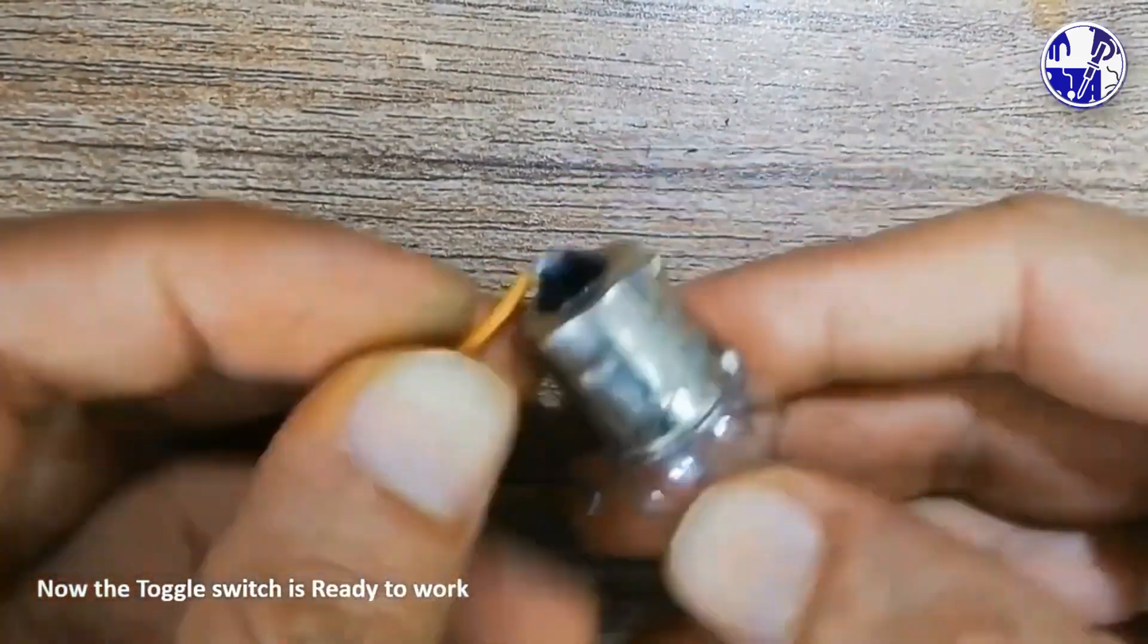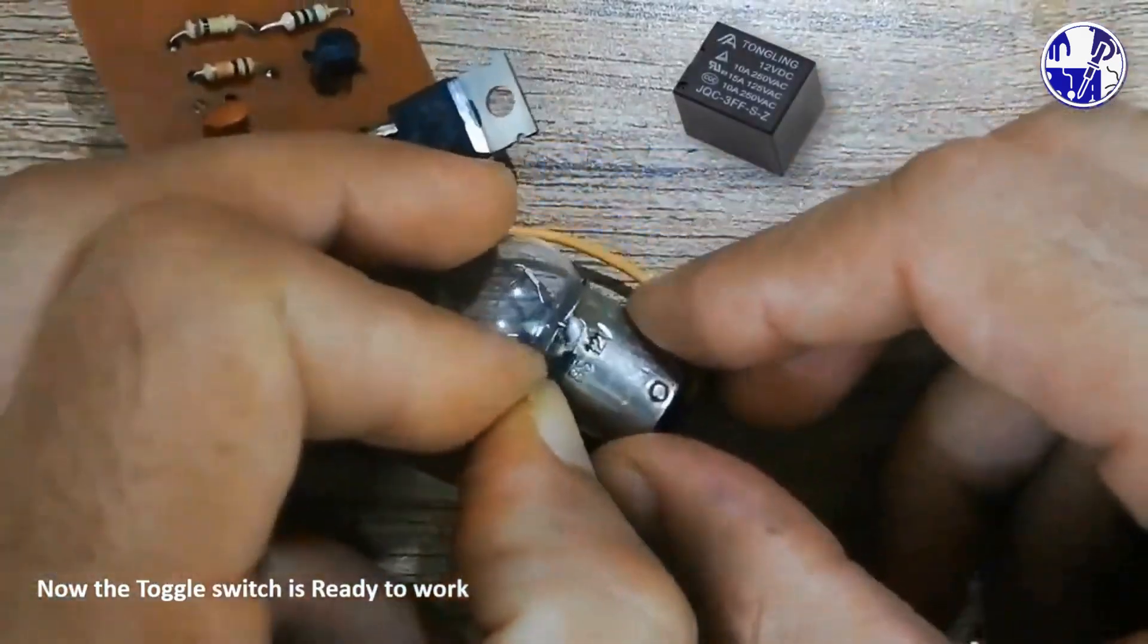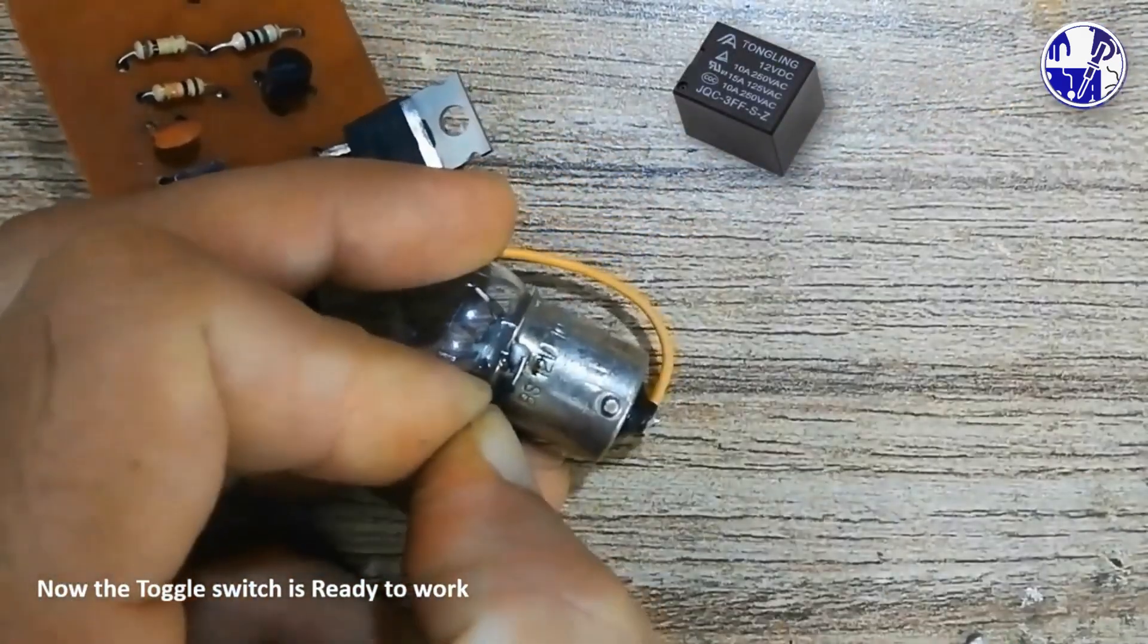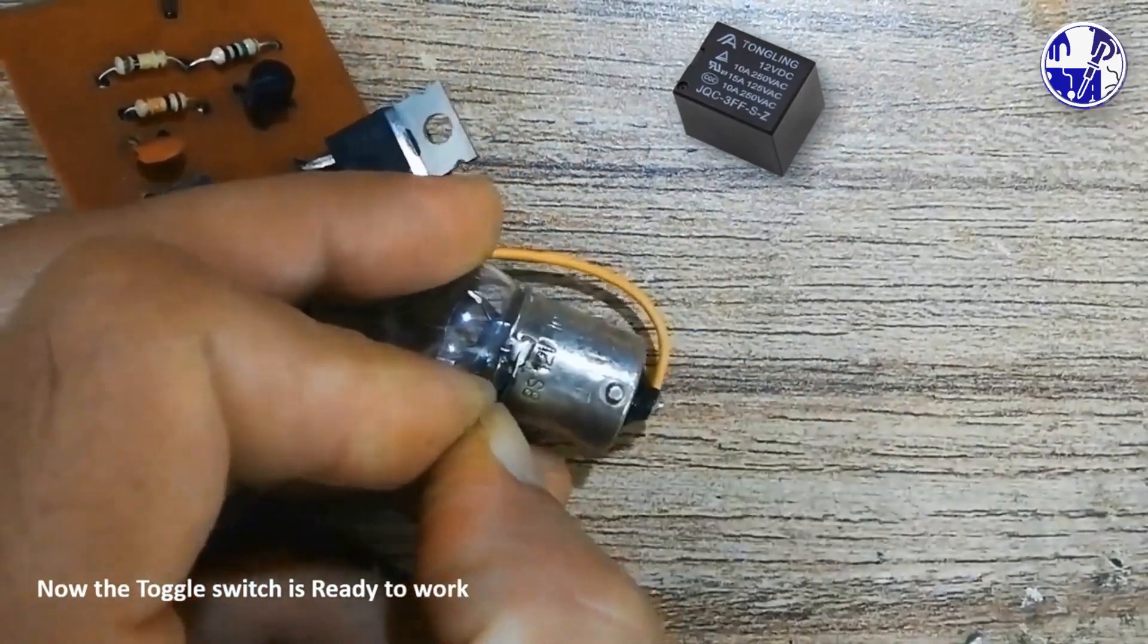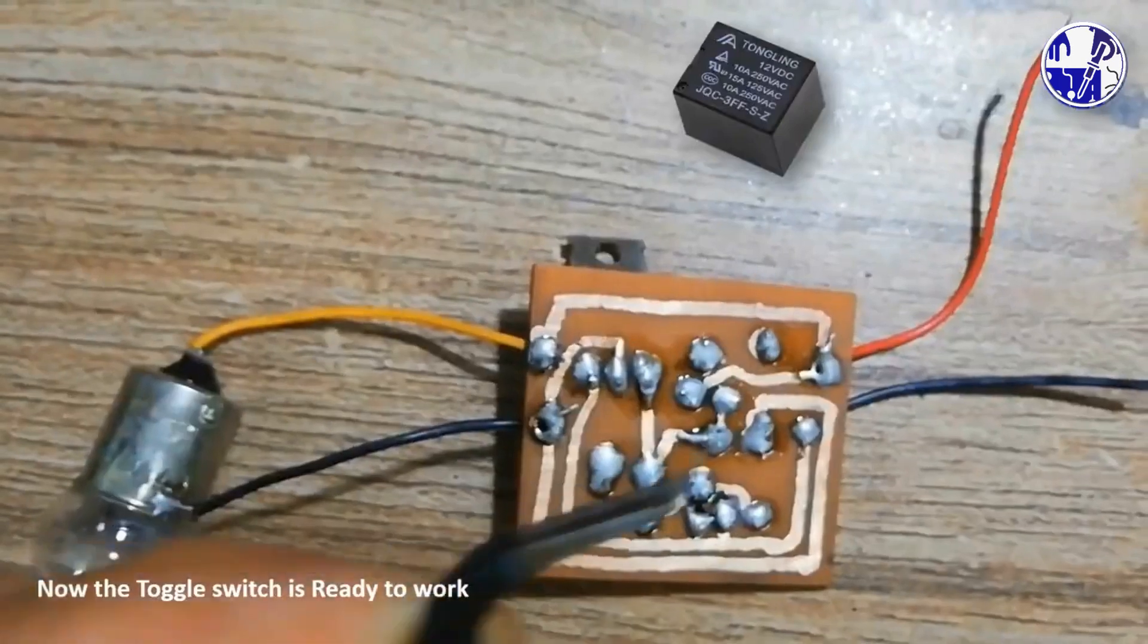Now, the project is ready to work. You can replace the DC load with a relay to control an AC load. The input voltage range is 5V to 45V, depending on your specific load requirements.